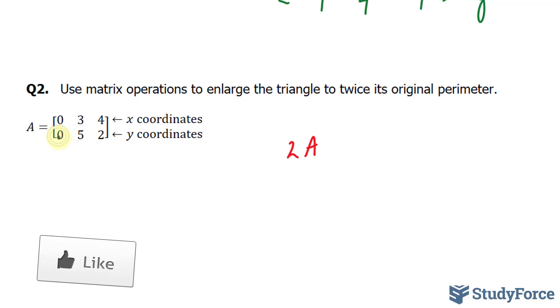2 times 0 and 2 times 0 should give us 0 and 0. 2 times 3 is 6. Times 5 is 10. For the last column, 8 and 4. 2 times 4 and 2 times 2. So let's go ahead and plot these points.